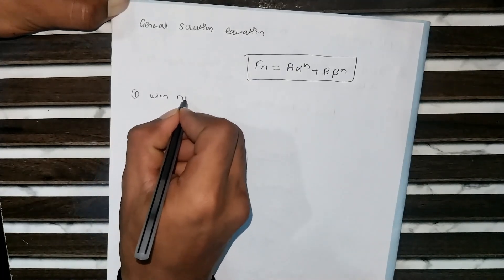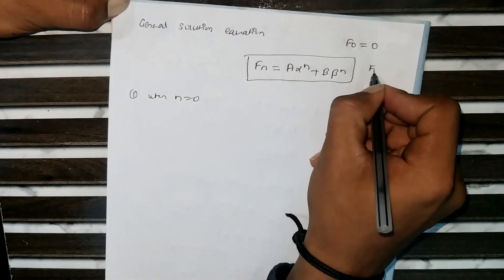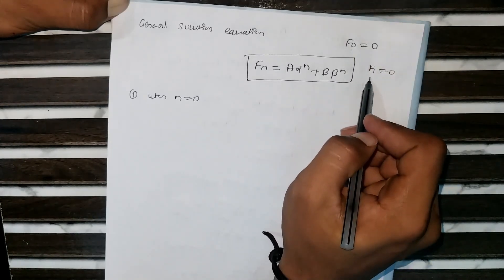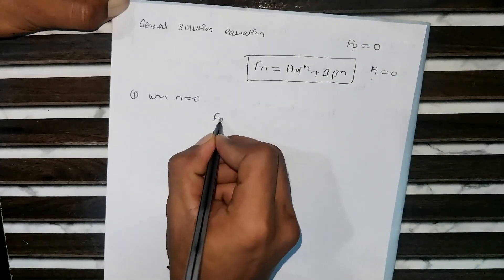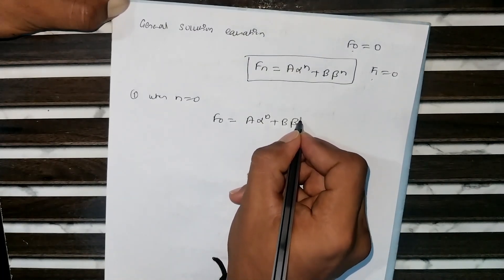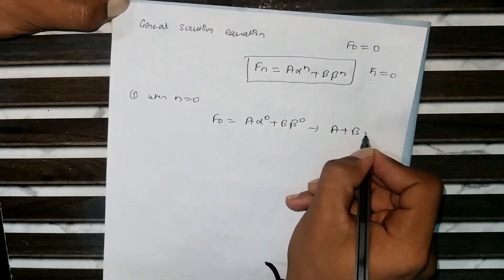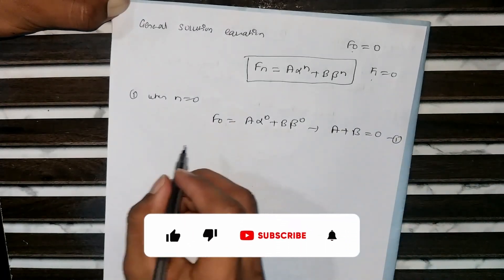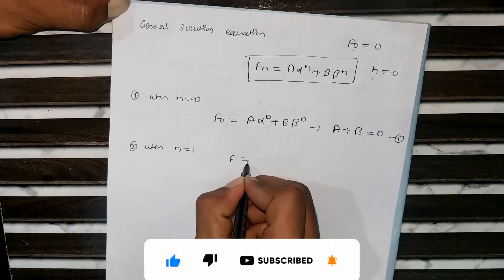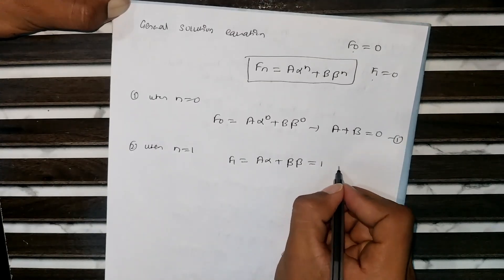Apply the initial conditions to find A and B. For n = 0: f(0) = A·α⁰ + B·β⁰ = A + B = 0 — this is our first equation. For n = 1: f(1) = A·α + B·β = 1 — this is our second equation.